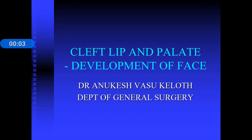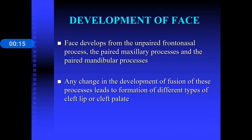Today we are going to discuss cleft lip and palate. In this session we are discussing the development of the face in relation to cleft lip and cleft palate. The face develops from five prominences or processes: one unpaired frontonasal process, paired maxillary processes, and paired mandibular processes — a total of five processes. Any change in the development or fusion of these processes leads to the formation of different types of cleft lip or cleft palate.